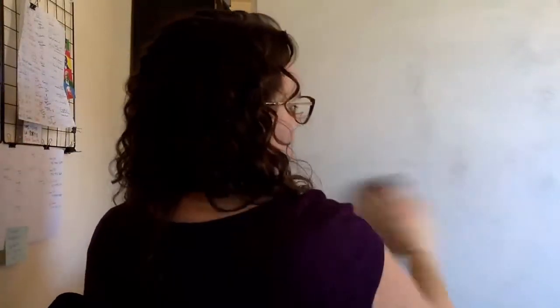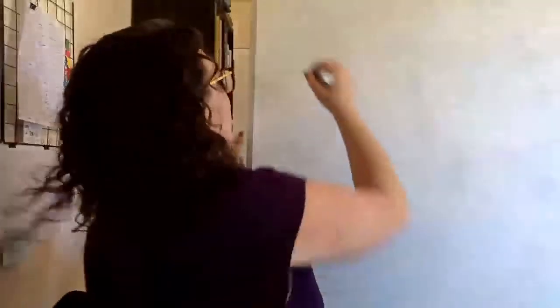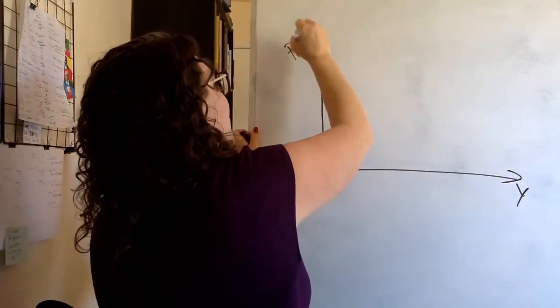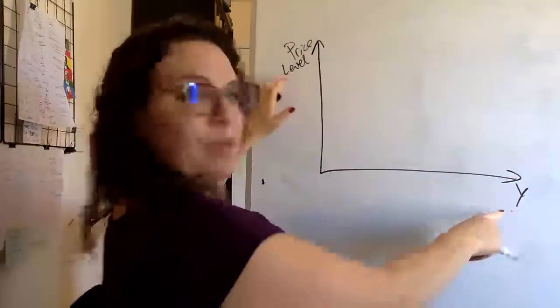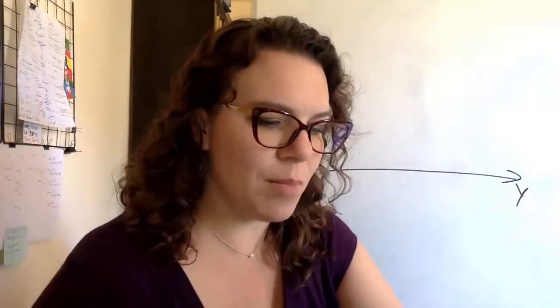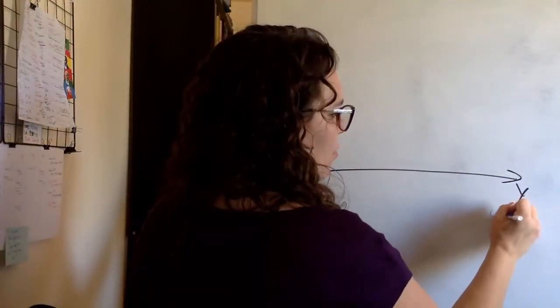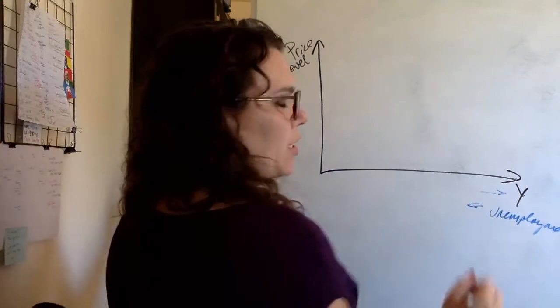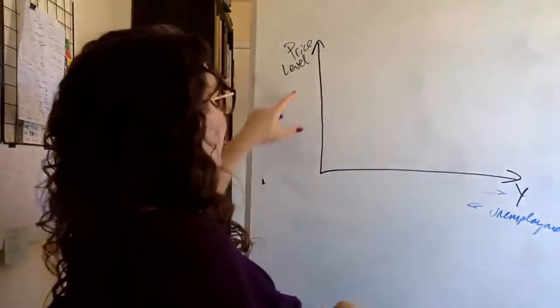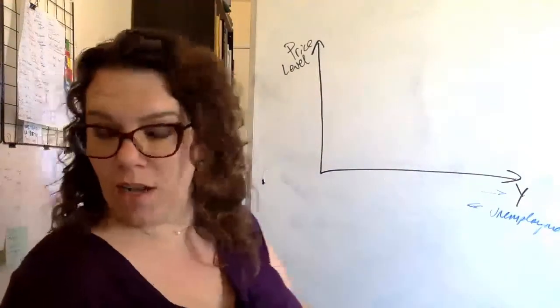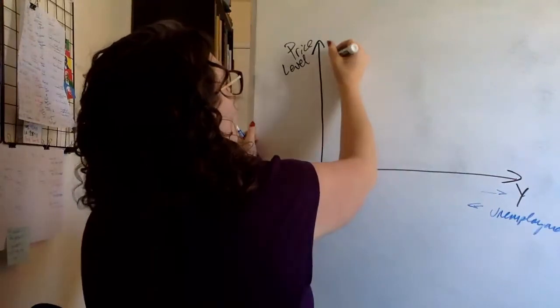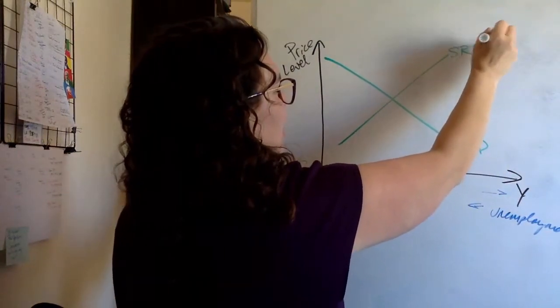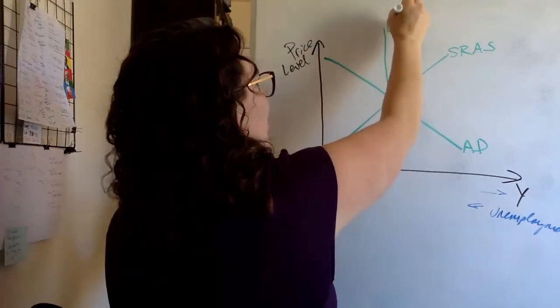So remember this all starts with our model of long-run aggregate supply and aggregate demand. So we have output GDP and our price level up here, which is basically GDP and inflation, two of our major measures of the economy. And remember we've also kind of low-key have down here unemployment. Generally when output goes up we're going to expect unemployment to go down. We'll start with aggregate demand, short-run aggregate supply, and long-run aggregate supply.